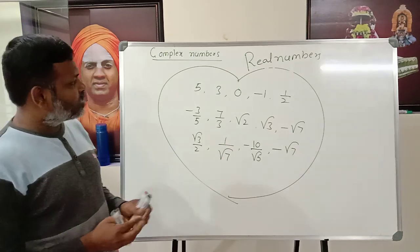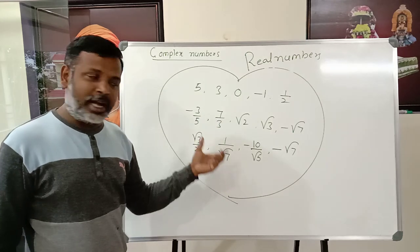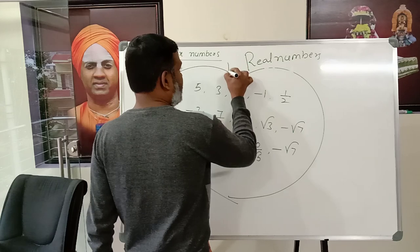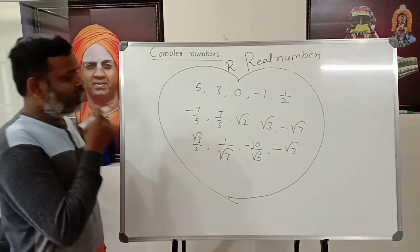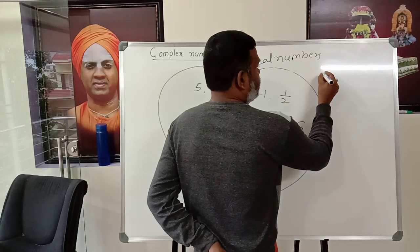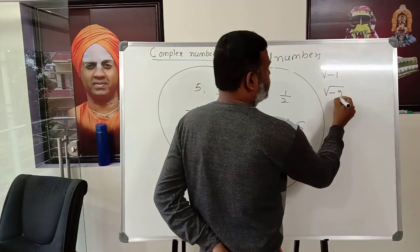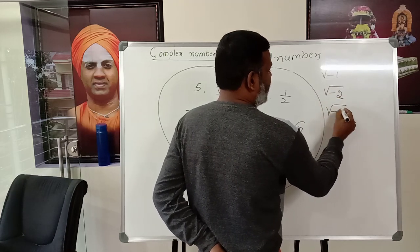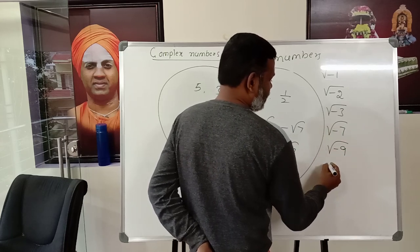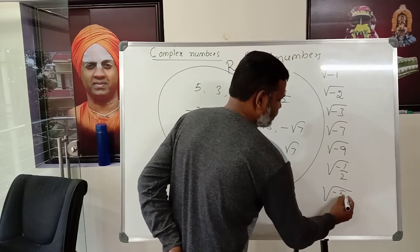Now I am going to write some numbers: √(−1), √(−2), √(−3), √(−7), √(−9), √(−1/2), √(−5/7). Consider whether these are square roots of positive or negative numbers.